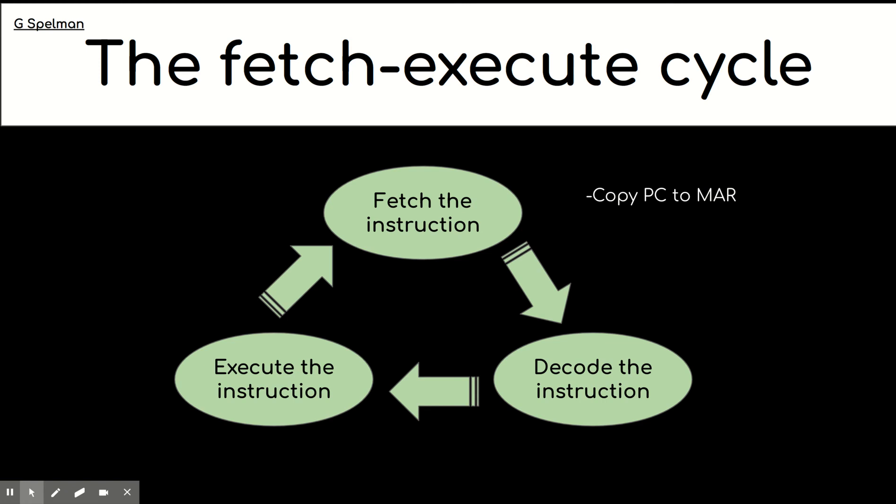Right, so we've learned now a little bit about the fetch decode execute cycle. We've learned a little bit about what's going on inside the CPU, and we've learned what the special registers are for. So what I'm now going to try and do is map the purpose of the registers to what's going on inside of the CPU. So we're going into a bit more detail now of the CPU, of the fetch decode execute cycle.